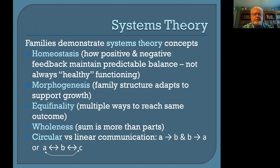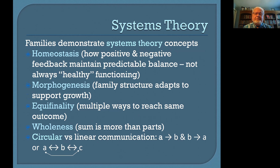Systems theory is a really good theoretical perspective for understanding family interactions. Some concepts particularly helpful for understanding families: homeostasis, which is the balance between family members — it's important to recognize this doesn't mean healthy functioning, it's just a predictable balance that may be functional or dysfunctional. Morphogenesis is the family's ability to adapt to challenges, while equifinality acknowledges that there's more than one way to reach an outcome preferred by the family.